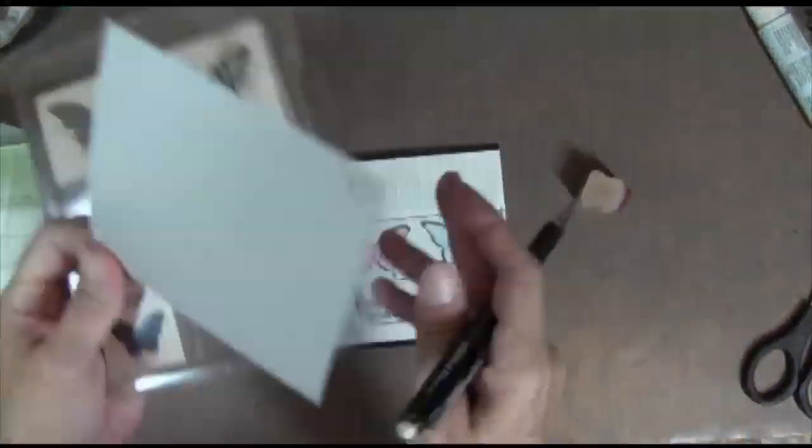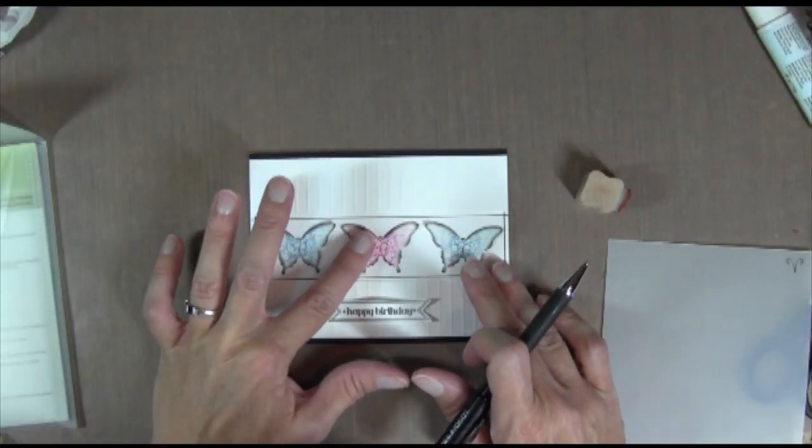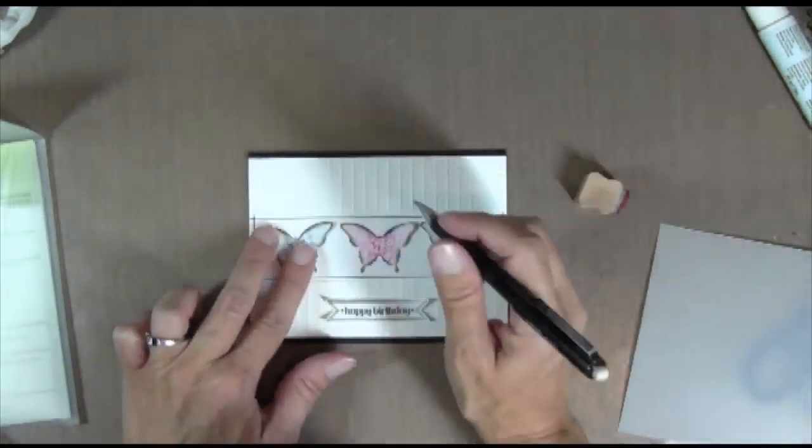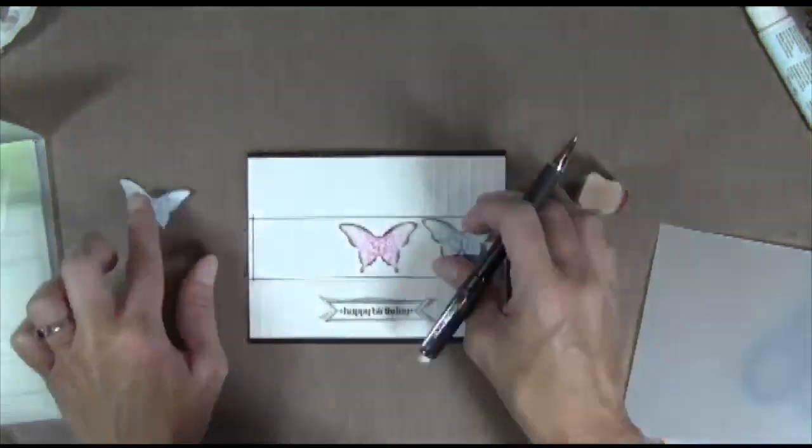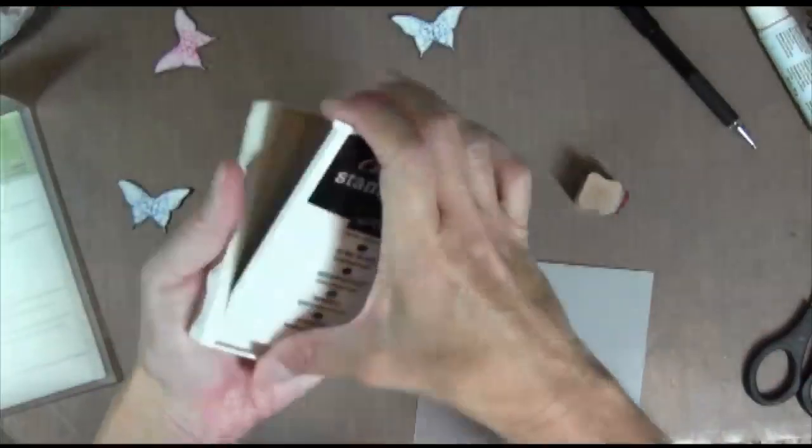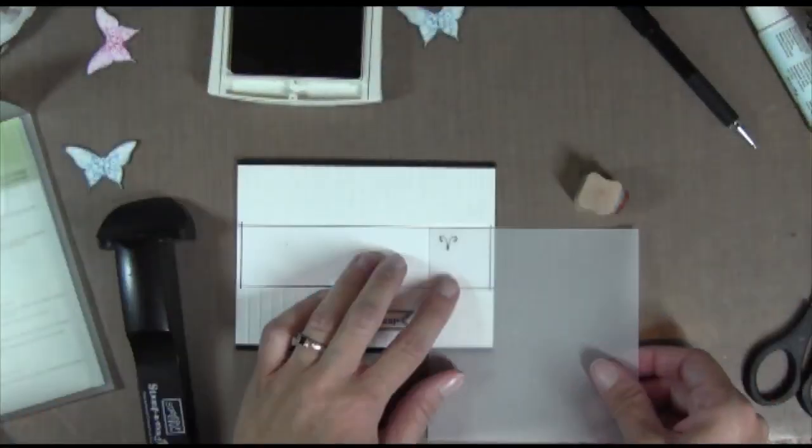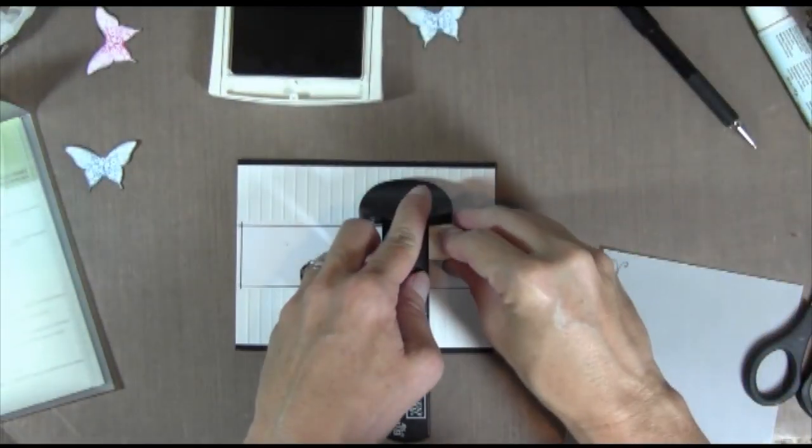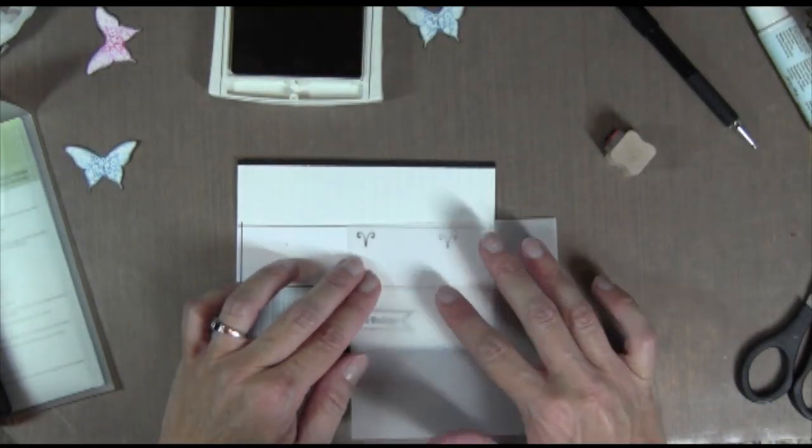So I'm going to take... I already started a piece of vellum for my Stamp-O-Majig and I'm marking where the antenna needs to go for each of these butterflies with a pencil. And then I'm going to use my Stamp-O-Majig since I have a wood-mounted stamp and I'm just going to line it up and stamp it down. I'm going to do that three times for each butterfly.